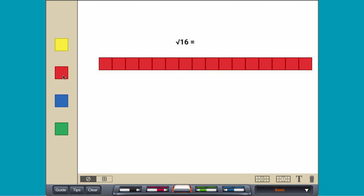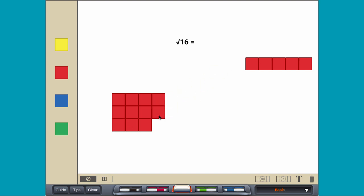To find the square root of 16, make a square using 16 tiles. Each side is 4 tiles long, so the square root of 16 is 4.